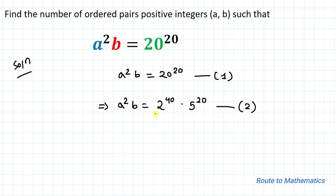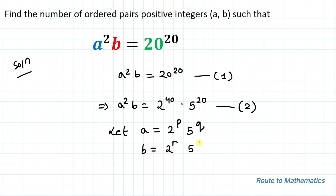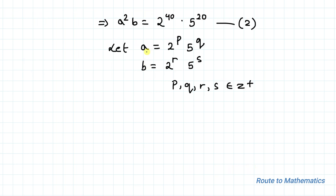By observing equation 2, we can say that both the values of a and b must be any power of 2 and 5. Let's take a = 2^p × 5^q and b = 2^r × 5^s, where p, q, r, and s are any positive integers. Now substitute the values of a and b into equation 2.